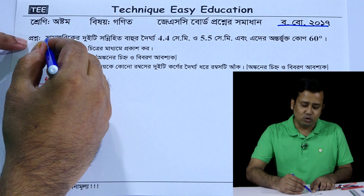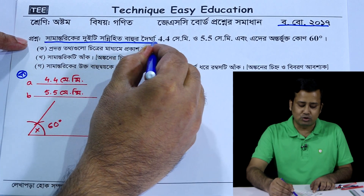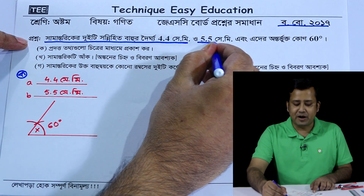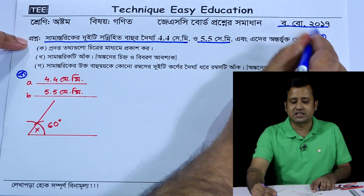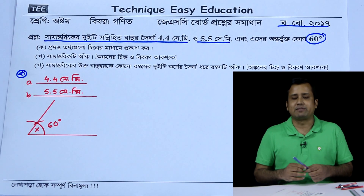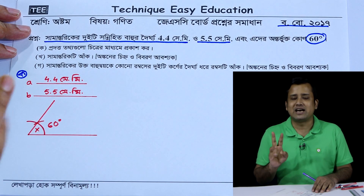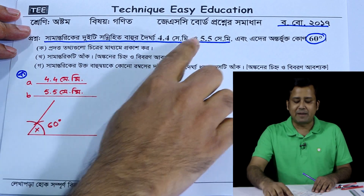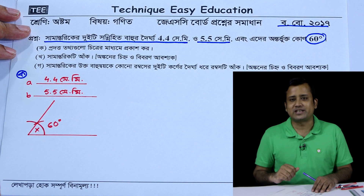If we look at this, while the measurement is very significant — the value is 5.5 cm. And which angle is 60 degrees? The measurement is 5.5 cm, and the angle is 60 degrees.